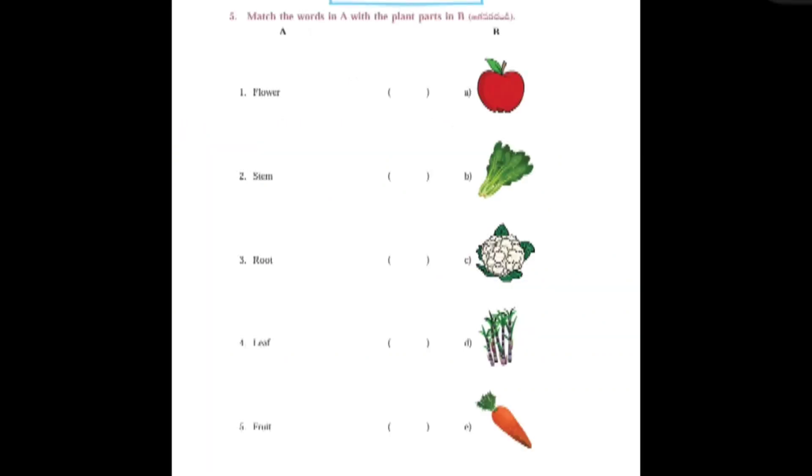Second one: Match the words in A with the plant parts in B. First one Flower, second one Stem, third one Fruit E, fourth one Leaf B, fourth one Fruit A.